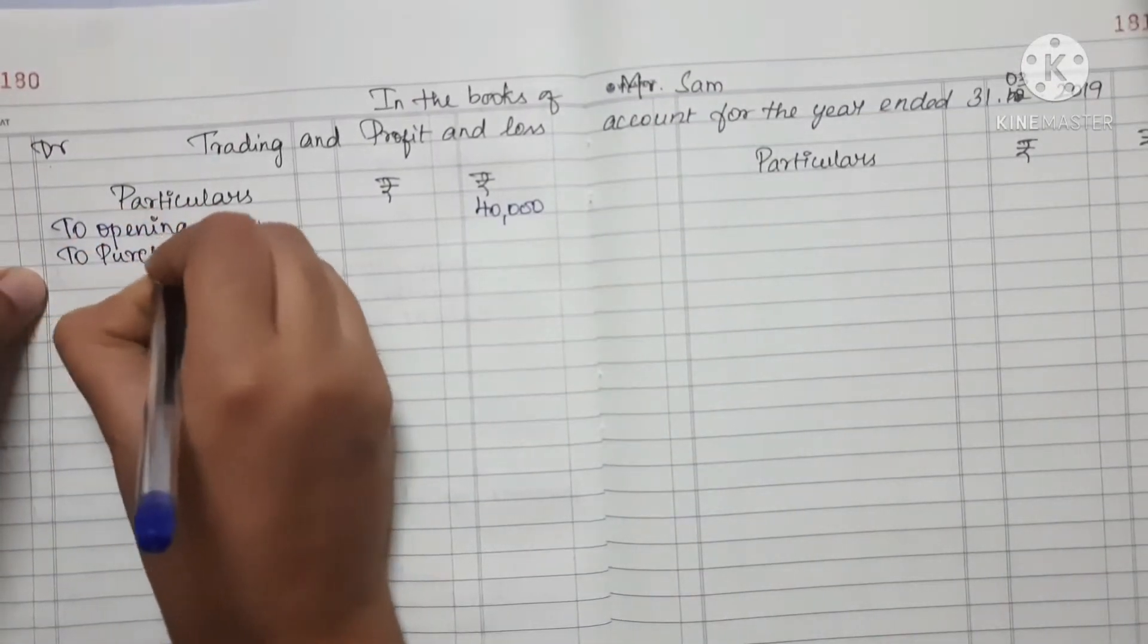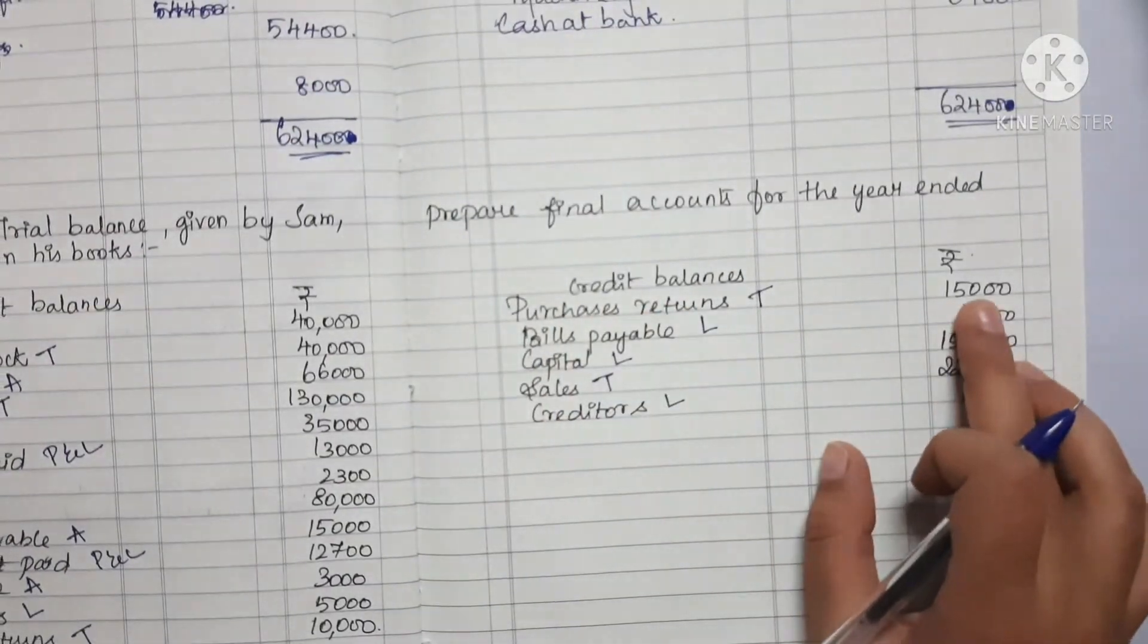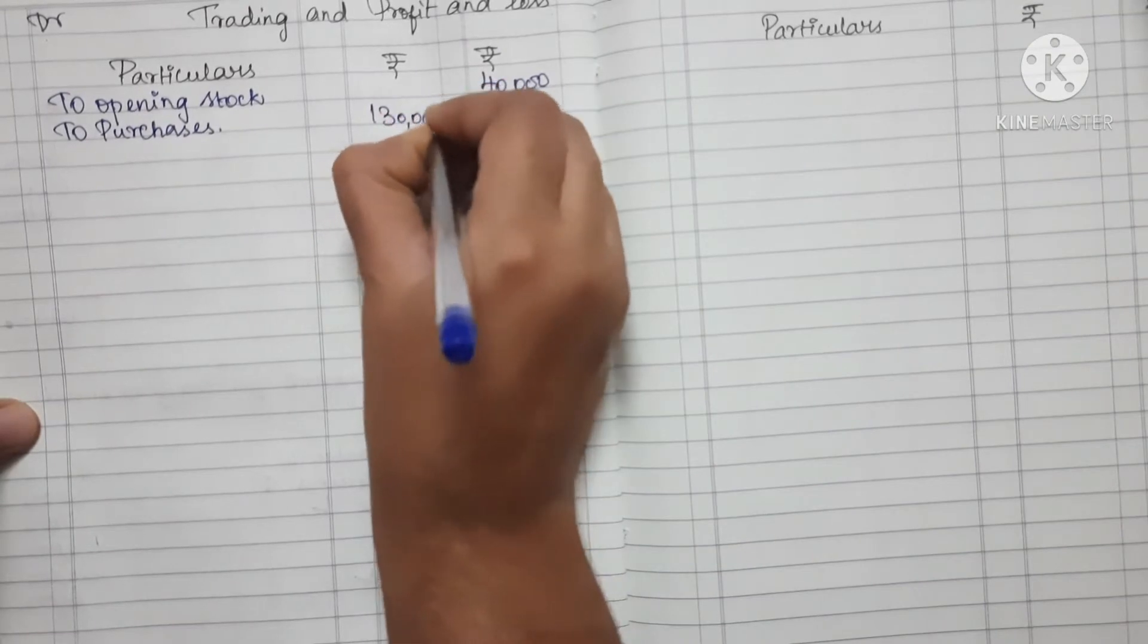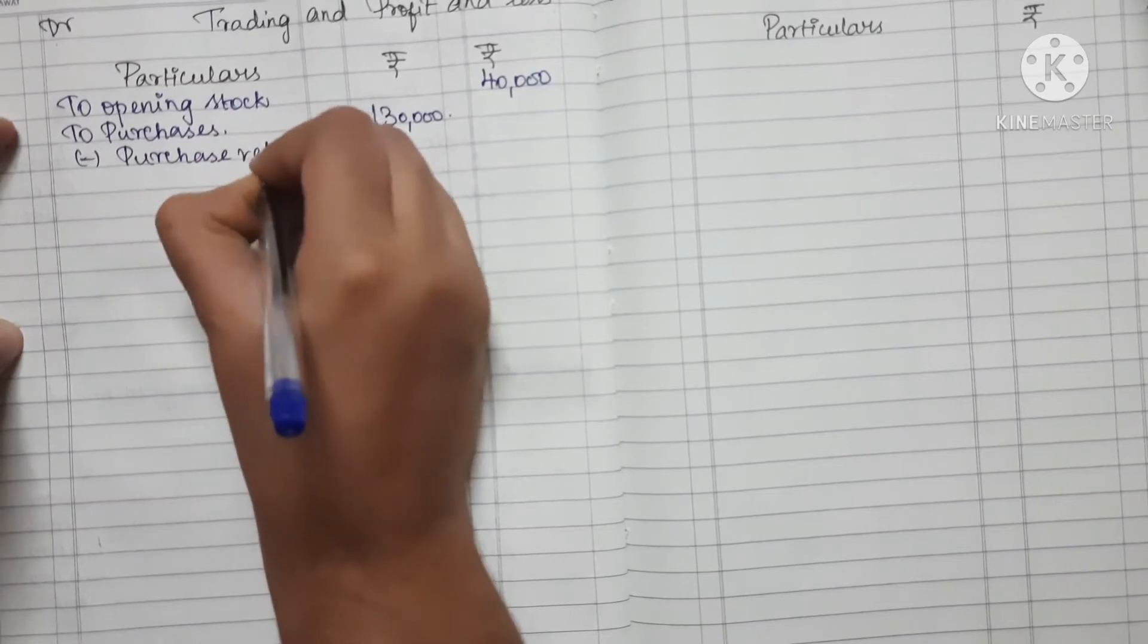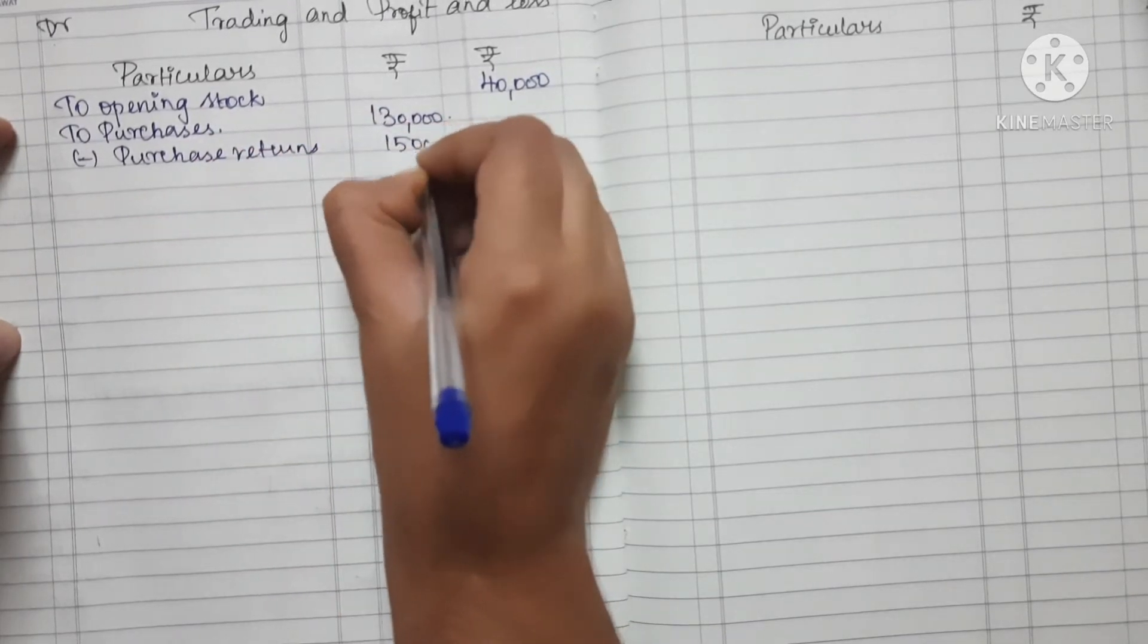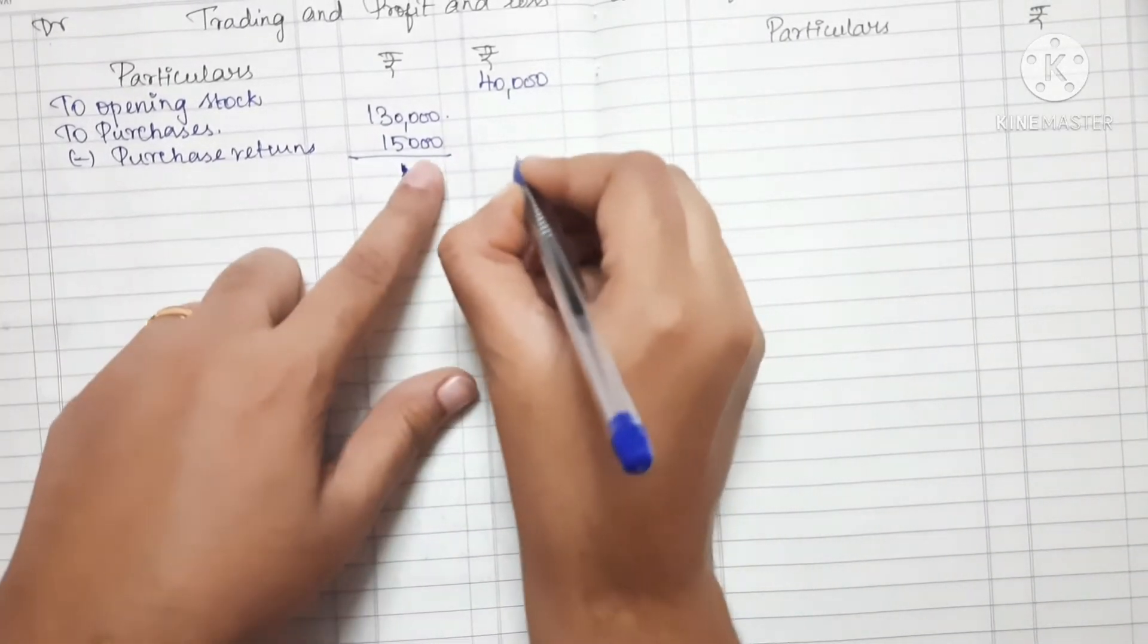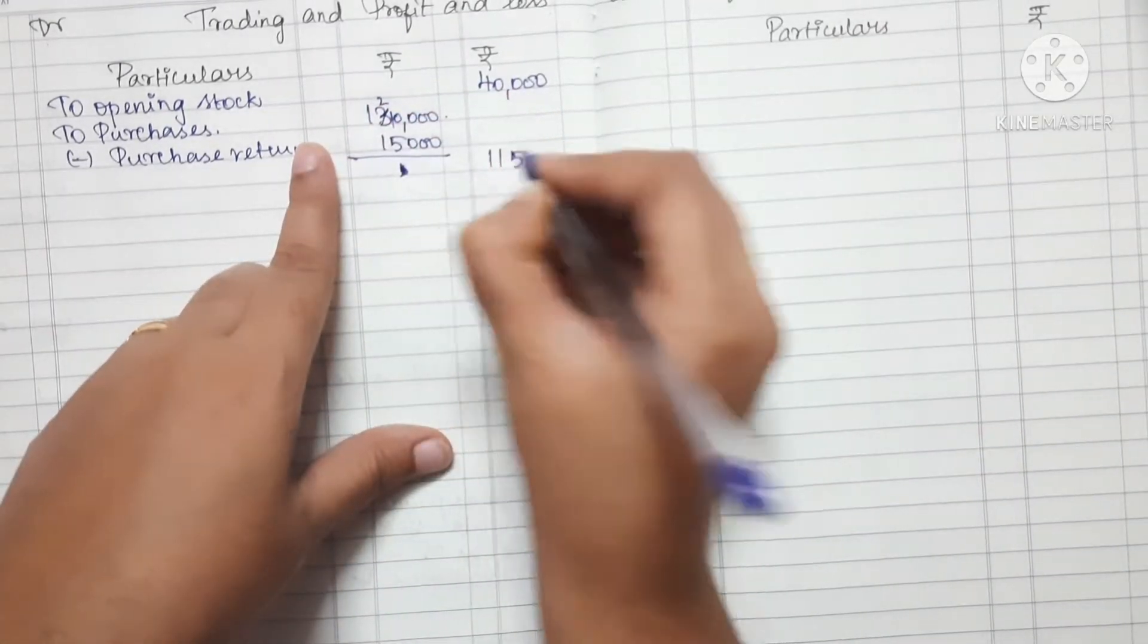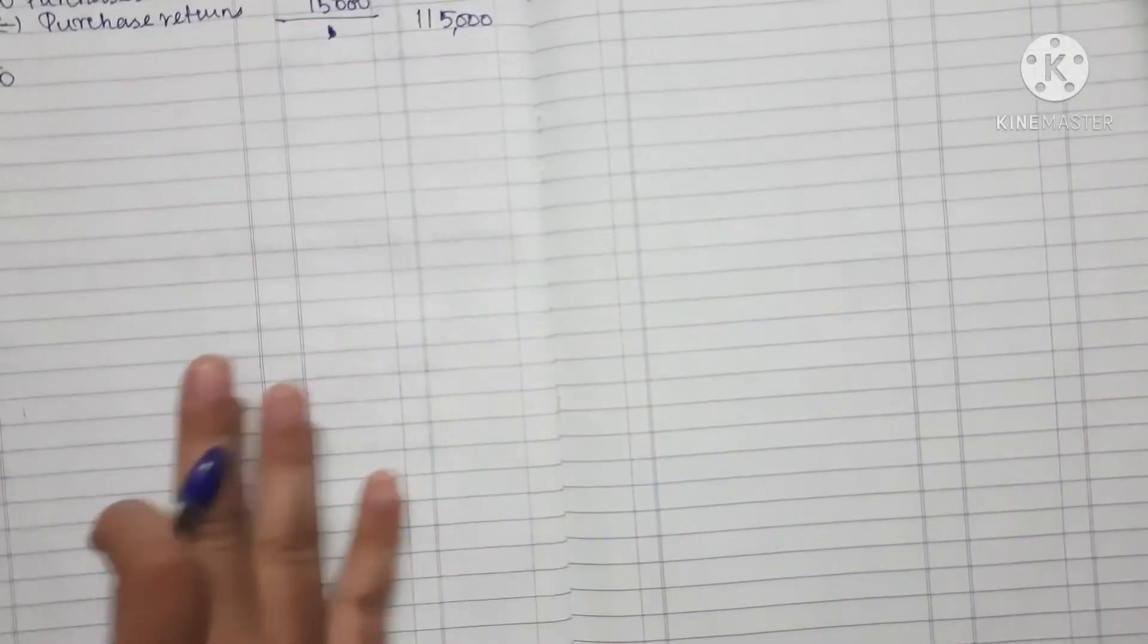Next, Purchase: the amount is 1,30,000, minus Purchase Returns of 15,000. So 1,30,000 minus 15,000 equals 1,15,000 in the outer column.